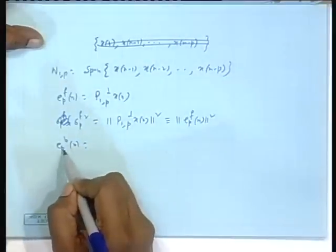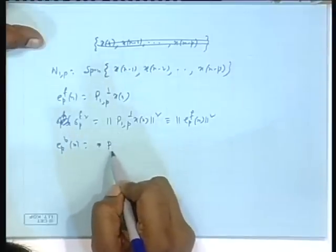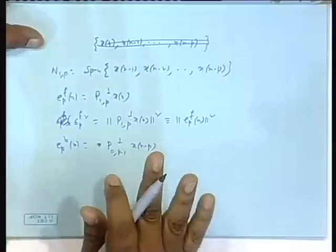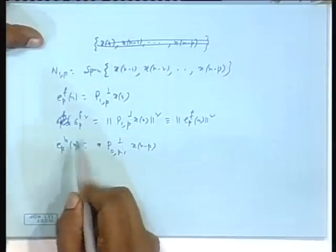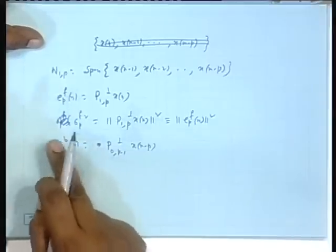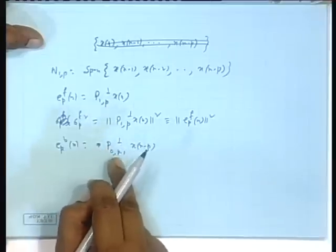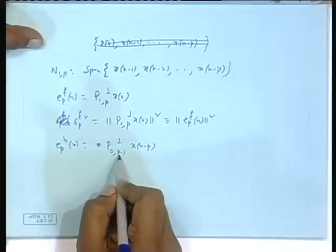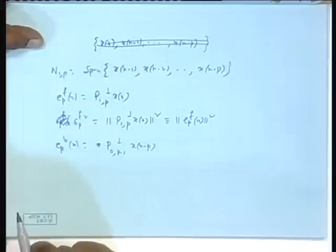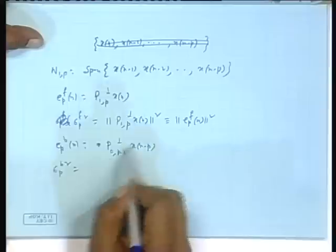So x_{n-p} needs to be projected on those p future terms: x_{n-0}, x_{n-1}, dot dot dot x_{n-p+1}, starting at 0 delay up to p minus 1 delay. This span gives the corresponding projection and error, and again the notation was the same thing.